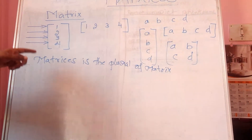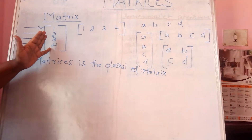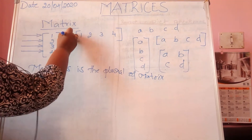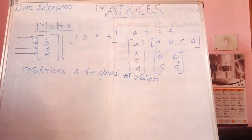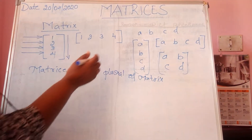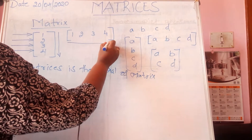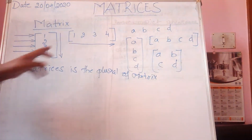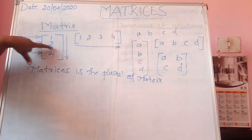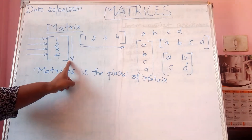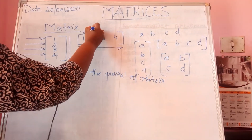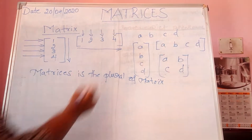Here, I have written 1, 2, 3, 4 in the form of a standing line, which is called a vertical line. Standing line is called a vertical line, and we call this a column matrix. Here I have written the numbers in a sleeping line, so this we call a row matrix. In this column matrix, there are 4 rows but 1 column. In the row matrix, there is 1 row but 4 columns: 1, 2, 3, 4.